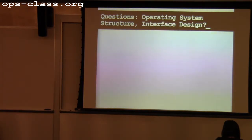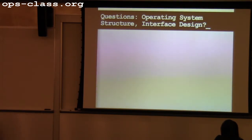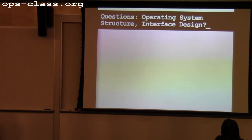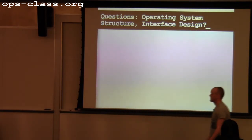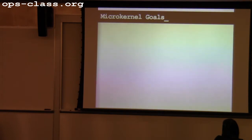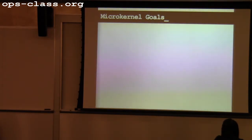Last Wednesday we talked about operating system structure. I didn't quite get through all of the interface design material at the end, but it was kind of obvious stuff you've heard before. Any questions about operating system structures? We talked about microkernels in particular, and the different approach that microkernels brought to kernel organization. Who remembers some of the goals — when people decided to try this radical reorganization of operating system structure, what were microkernels trying to accomplish?